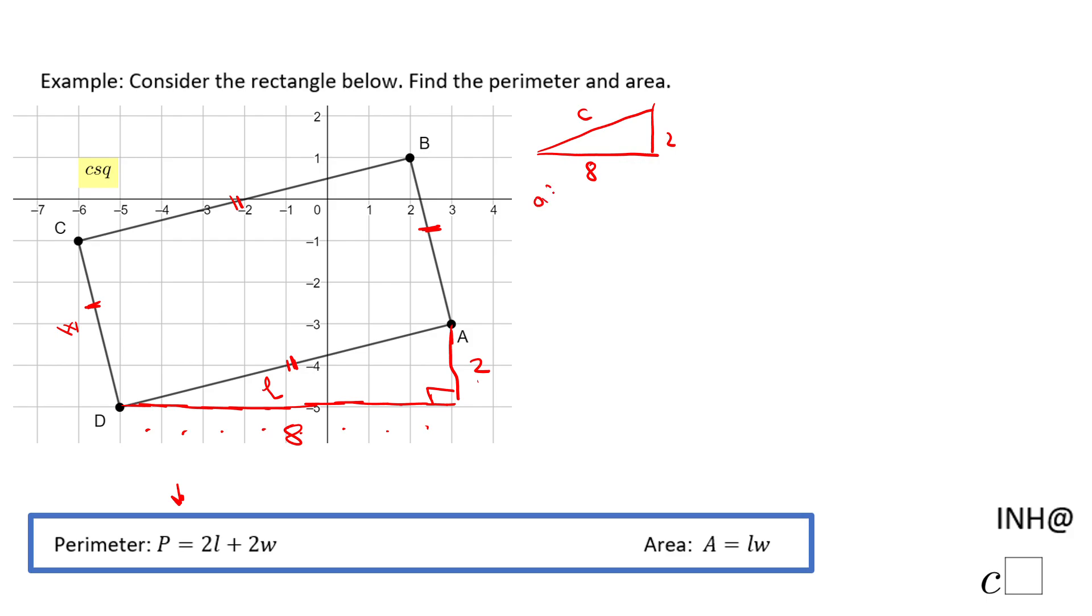So we have this triangle: eight and two, and this is c. Using the Pythagorean theorem, a² + b² = c², we have 8² + 2² = c².